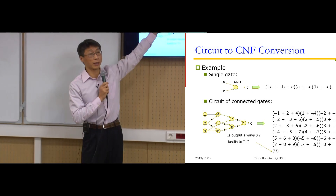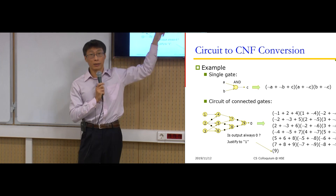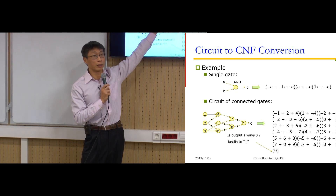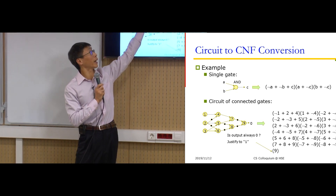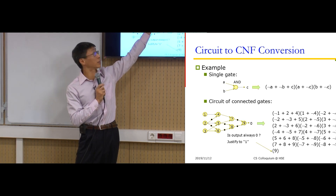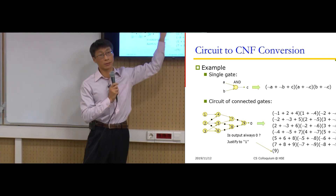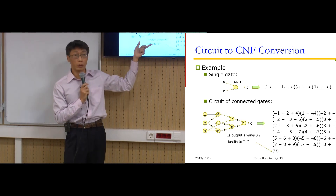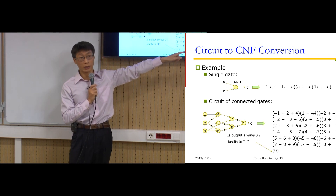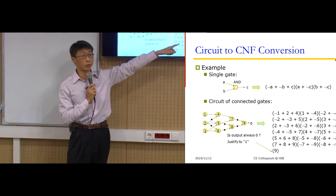CNF and AIG are not that different. As long as you can represent something efficiently in AIG, you can convert it efficiently into CNF. Given an AIG AND gate, we can rewrite it in terms of three clauses: C is equivalent to A AND B, meaning A AND B implies C, and C implies A AND B. Therefore, if we are given an AIG circuit structure, we can convert it in linear time into a CNF expression — each AND gate corresponds to at most three clauses with three literals.